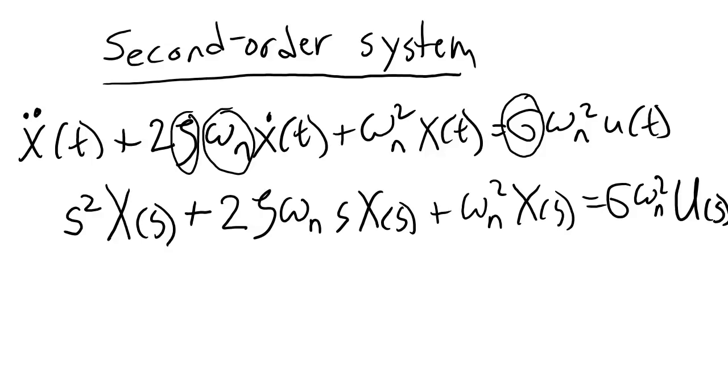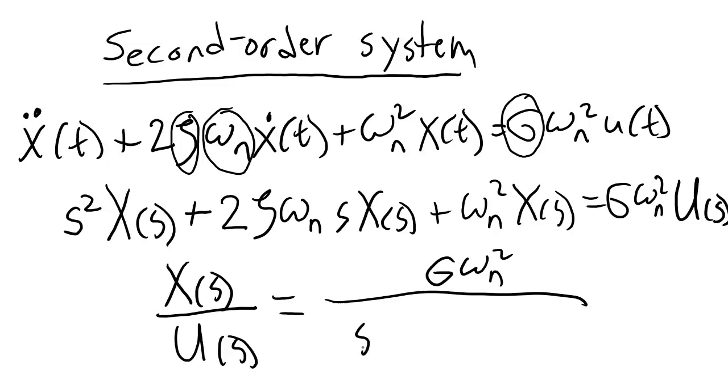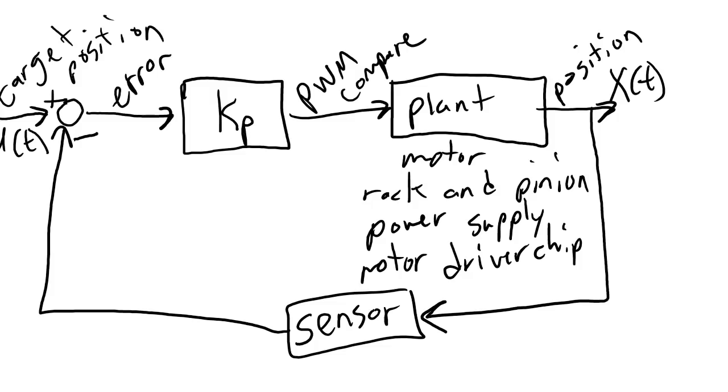Now I could simplify this equation by finding something that we refer to as the transfer function. The transfer function is the output divided by the input. X of s here is my output. So I'm going to put that in the numerator. And I want to get U of s in the denominator because that's the input. And then I'll write on the right hand side everything that we're left with.